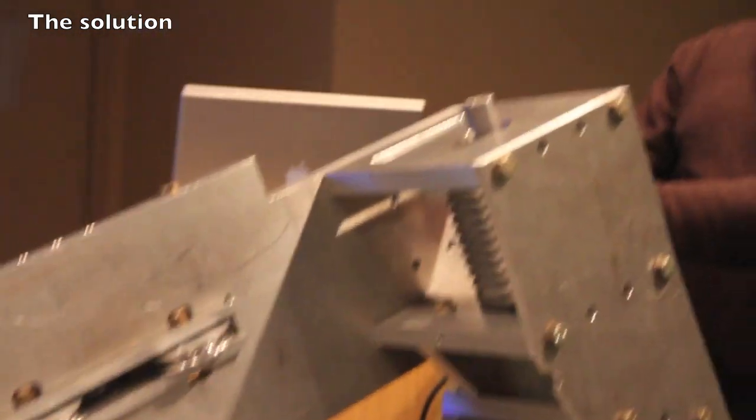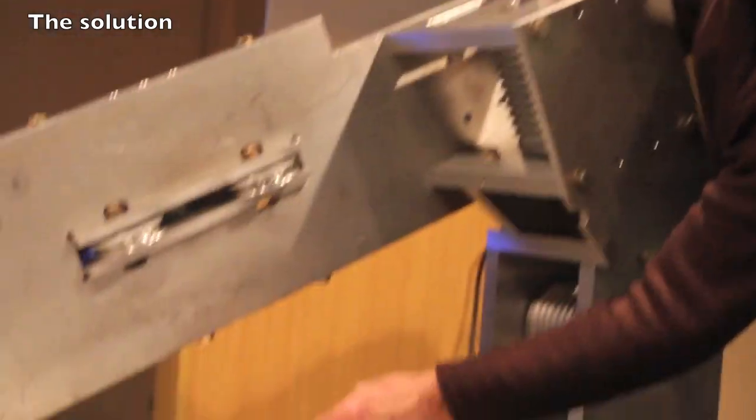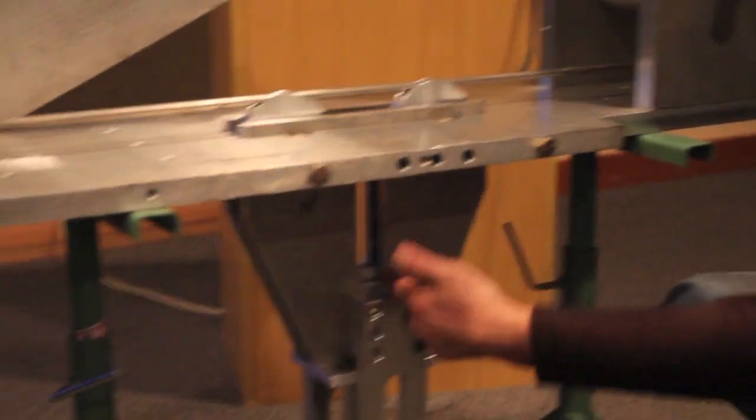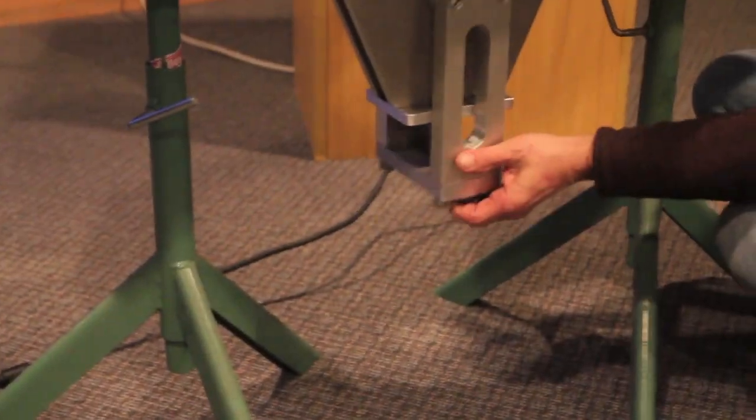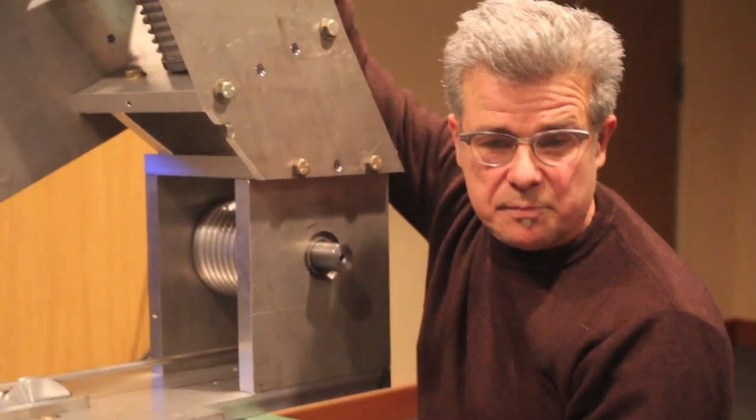So you've got your ropes. Pretend this is a rope. So your rope's coming through here. It's going down here to another spool, and then this goes up and down. And down in here you have a piece of urethane, which is the spring.